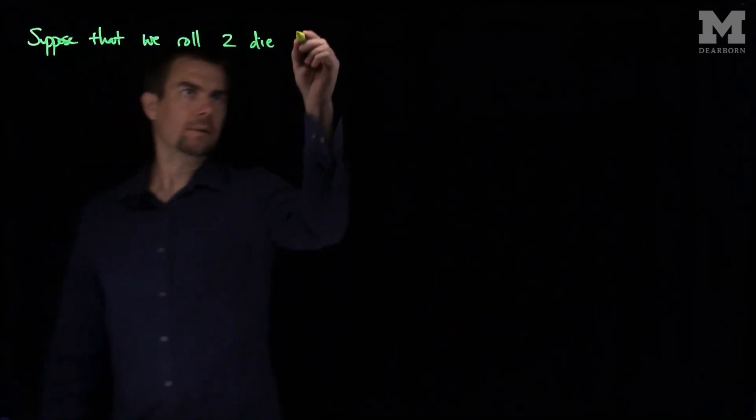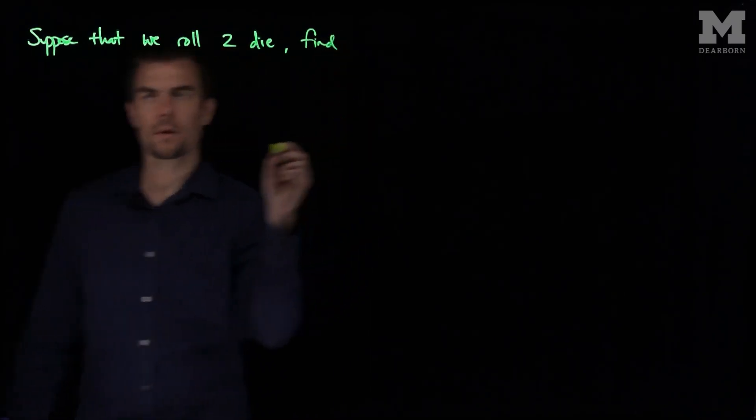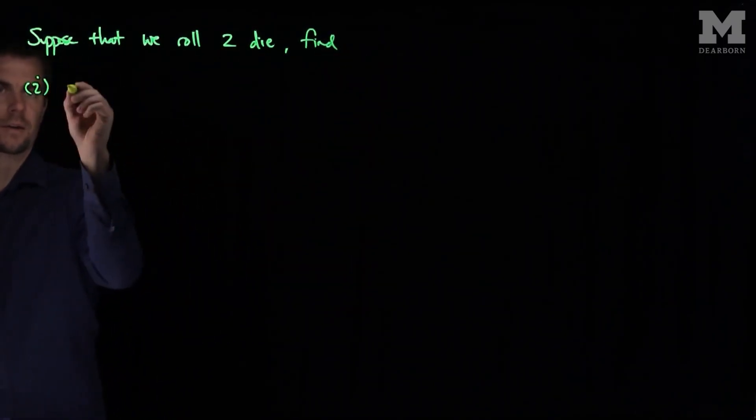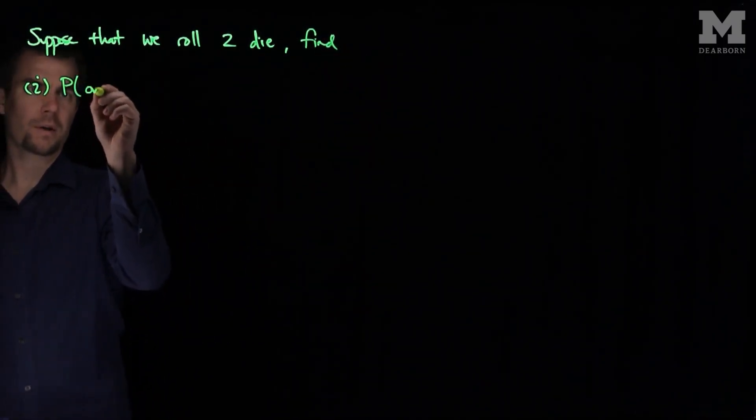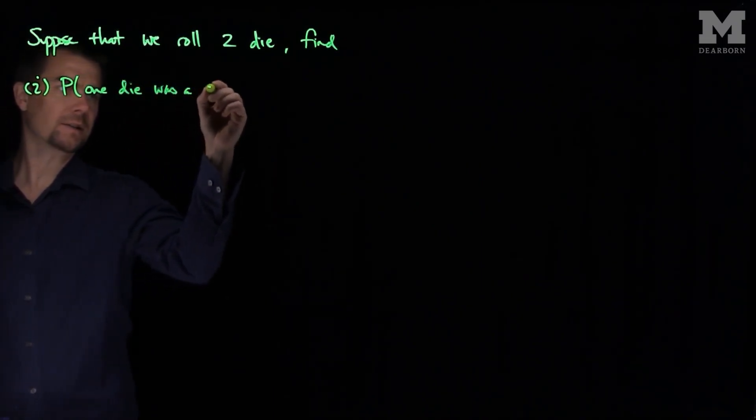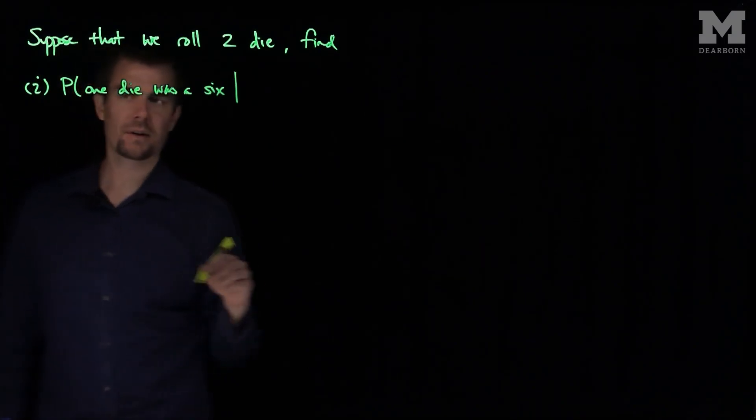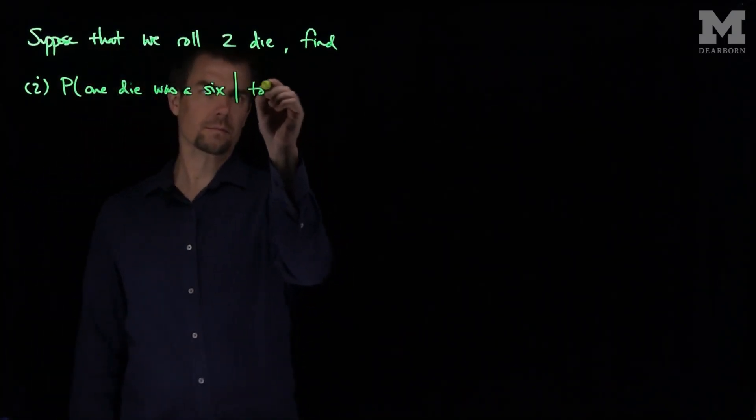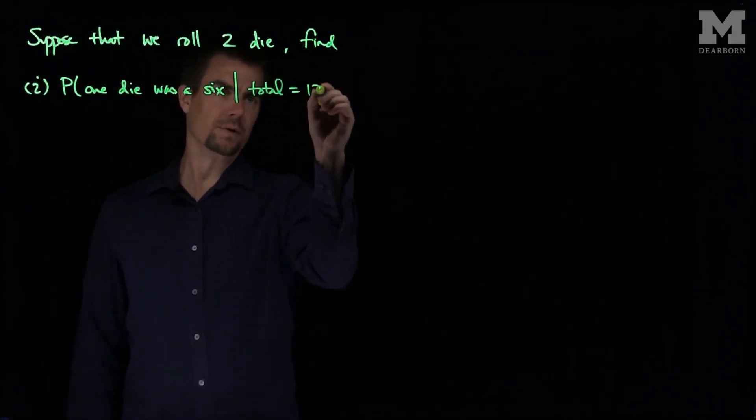Let's find two things. Let's first find the probability that one die was a 6 given that the total was 12.